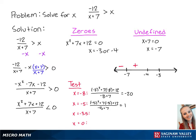For x equals negative 3 and a half, we have negative 3 and a half squared plus 7 times negative 3 and a half plus 12, all over negative 3 and a half plus 7, which is equal to negative 1 fourteenth. Since this number is negative, this means that x values between negative 4 and negative 3 will make the left side of the inequality negative.